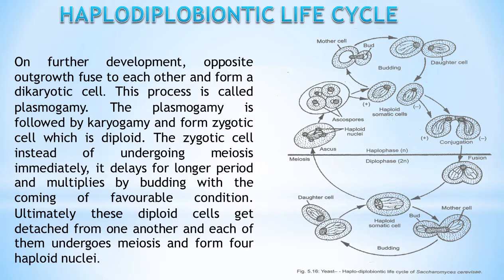Plasmogamy is followed by karyogamy and forms a zygotic cell which is diploid. The zygotic cell, instead of undergoing meiosis immediately, delays for a longer period and multiplies by budding with the coming of favorable conditions. Ultimately, these diploid cells get detached from one another and each of them undergoes meiosis to form four haploid nuclei.